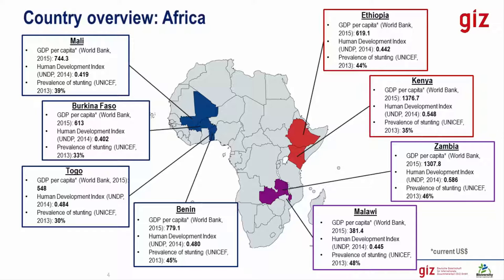There are 11 countries in the One World No Hunger Program for food and nutrition security. Nutrition baseline surveys were done on 10 of them. Four countries are in Western Africa: Mali, Burkina Faso, Togo, and Benin. Two countries are in Eastern Africa: Ethiopia and Kenya. Two are in Southern Africa: Zambia and Malawi.